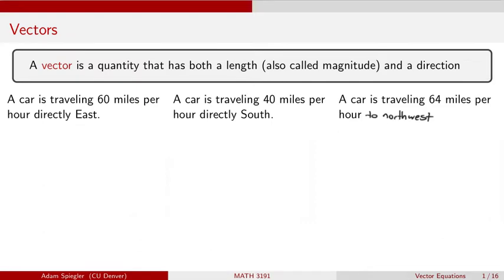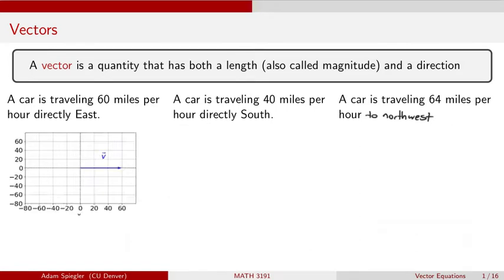One way that I could represent this vector graphically would be to draw a directed line segment whose length is equal to the magnitude, which would be the speed. So this is 60 units long, and the direction points in the direction that this car is moving directly to the east.